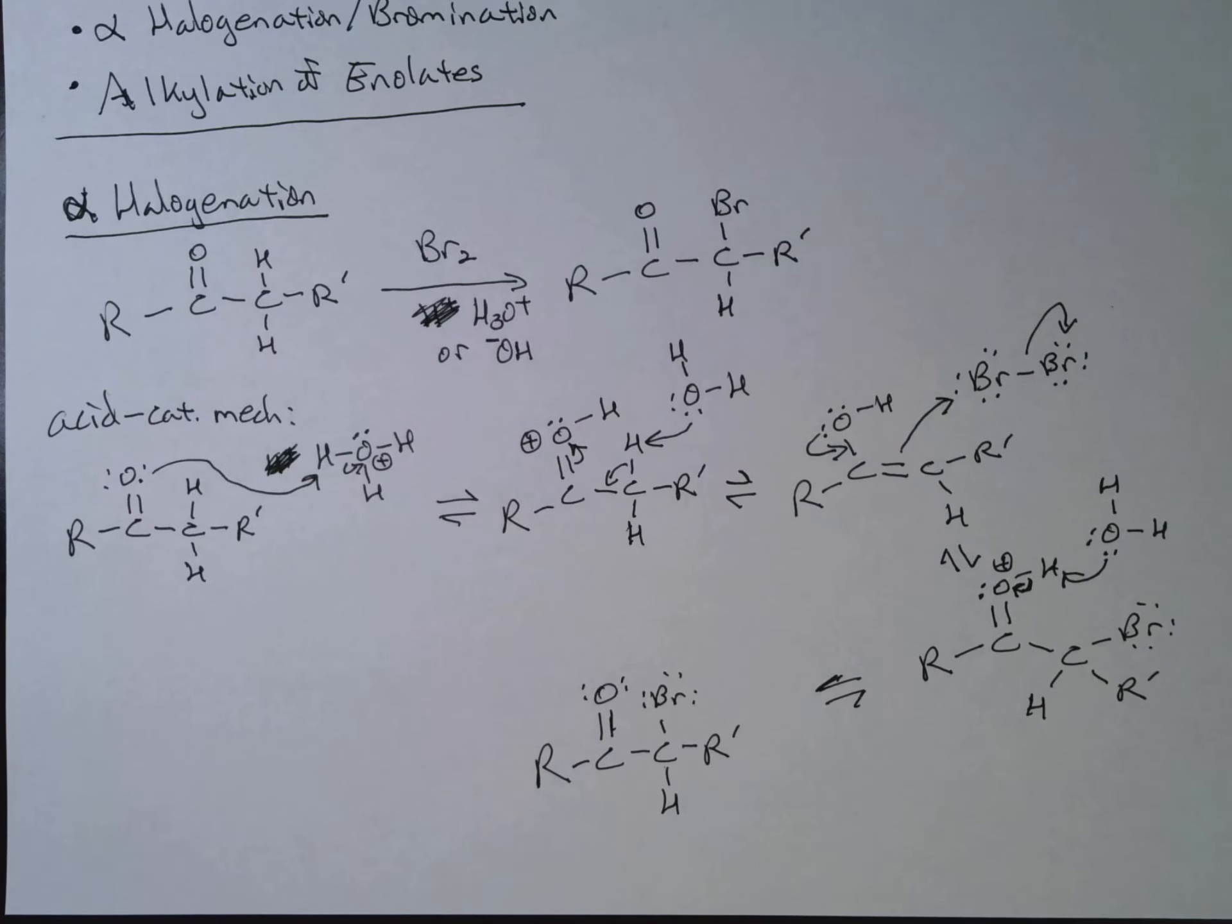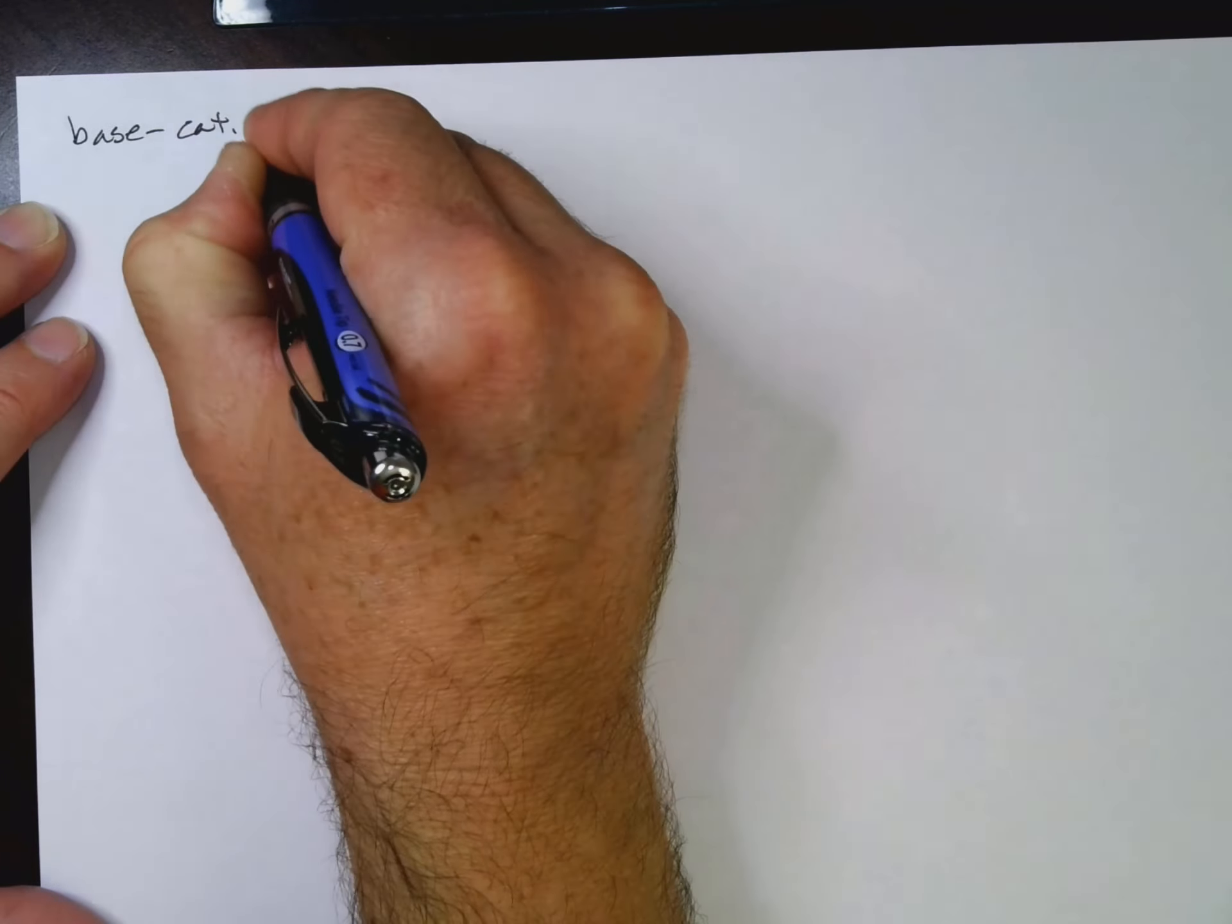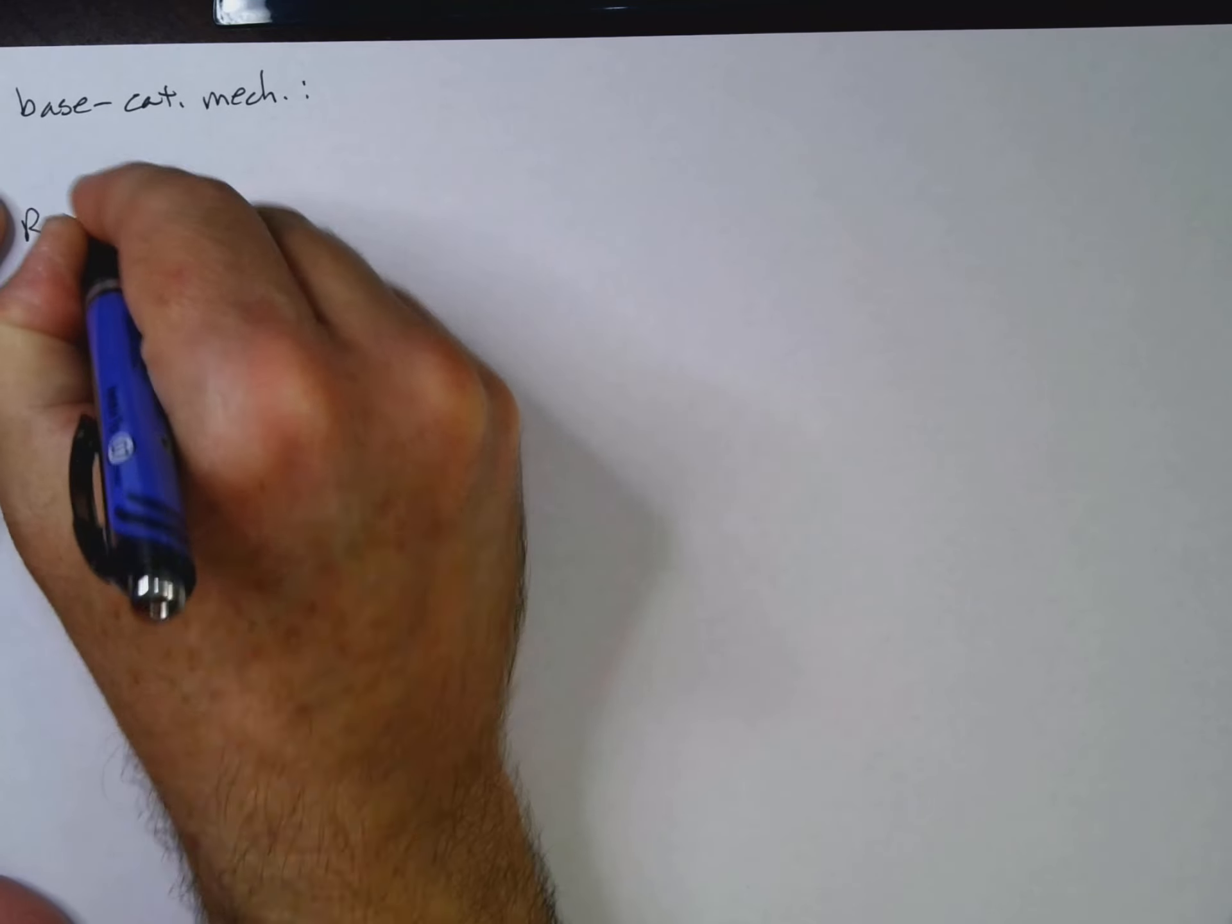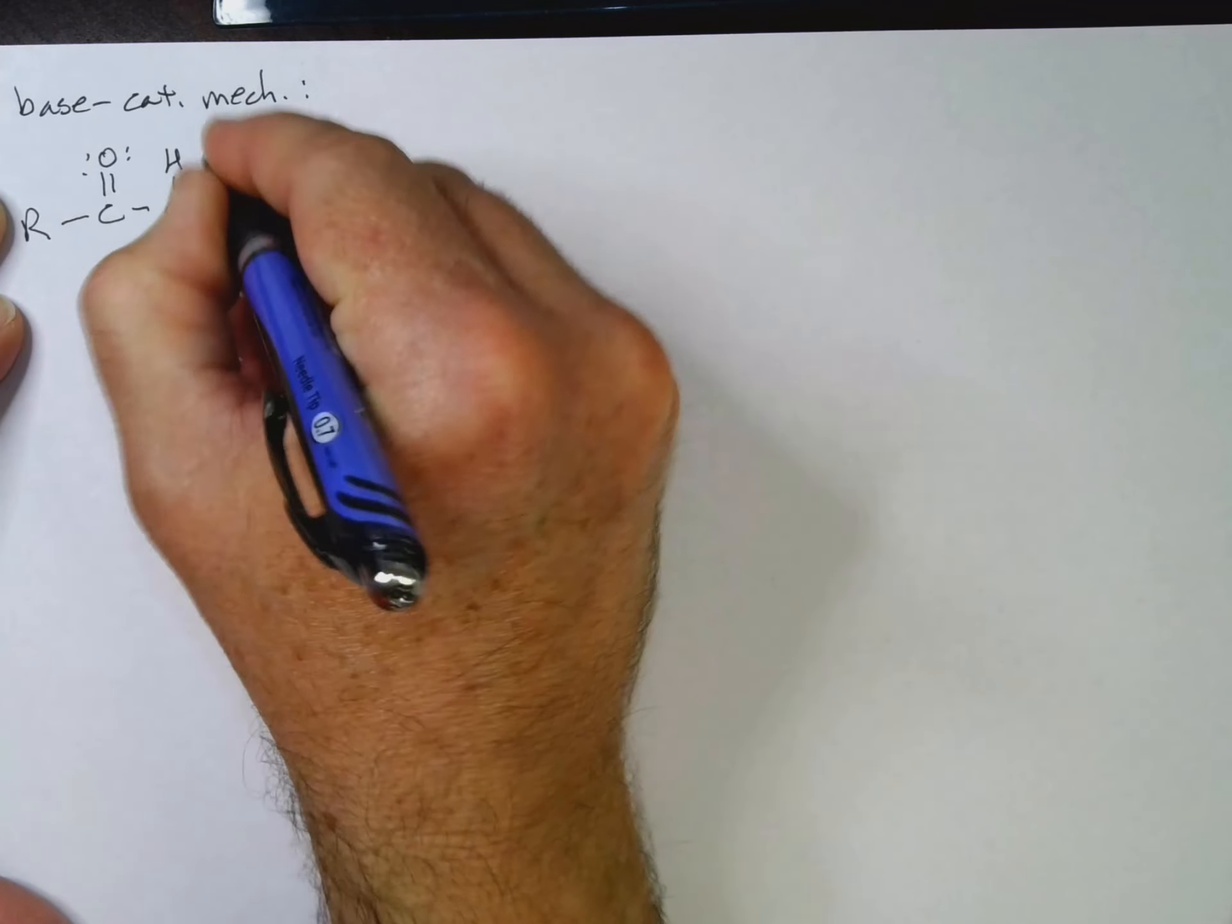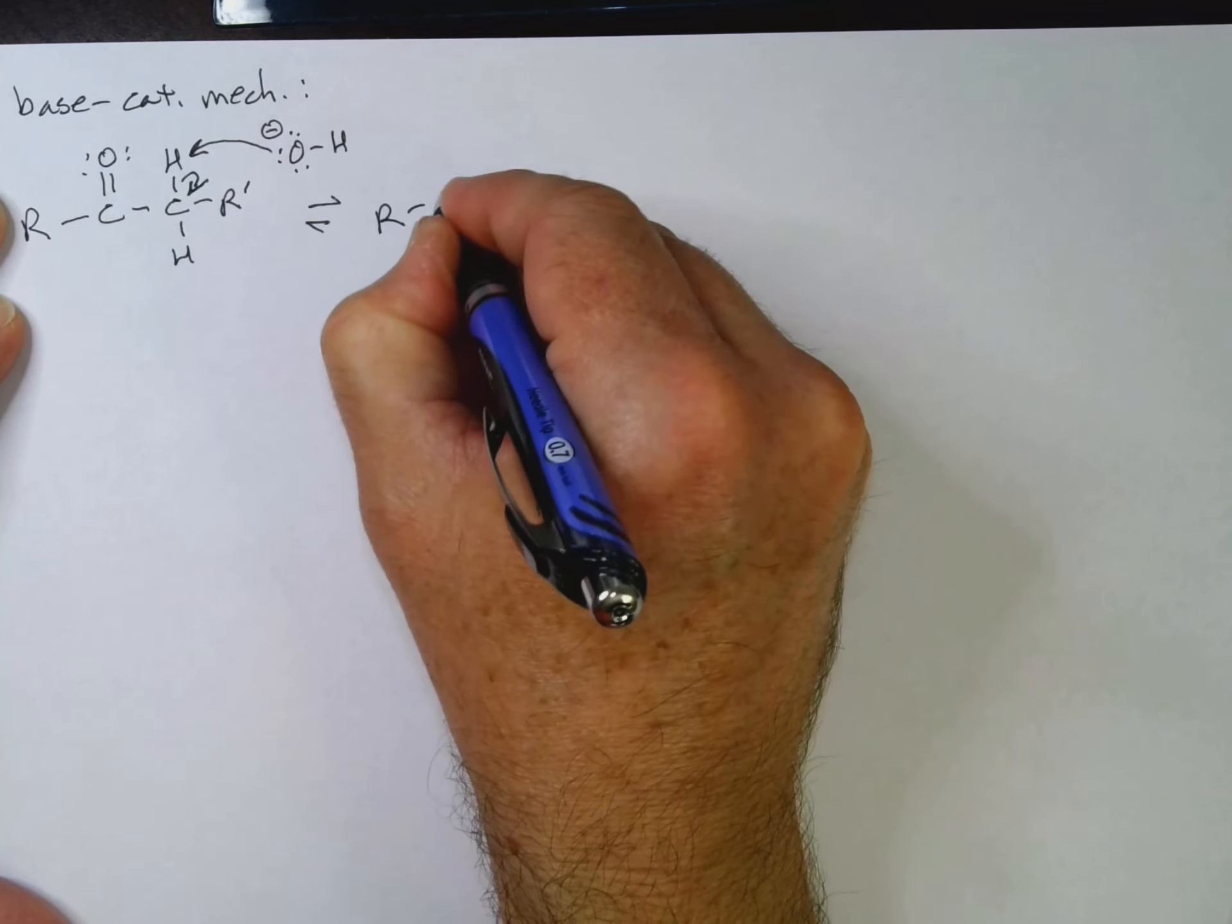Now, what happens in base? Well, in base, we do our deprotonation of the alpha carbon first. So we'll have R, C double bond O, C, lone pair, lone pair, lone pair, H, R prime H, OH-. We will get our deprotonation. We'll get those electrons onto the alpha carbon.